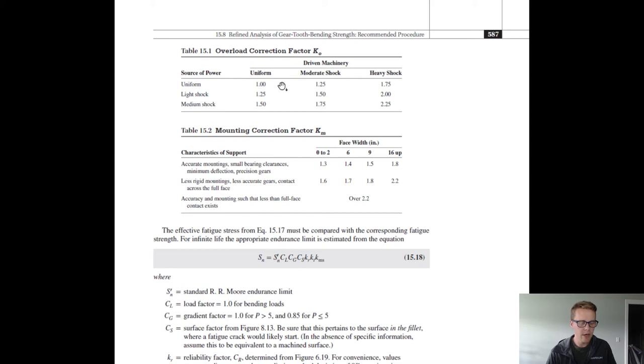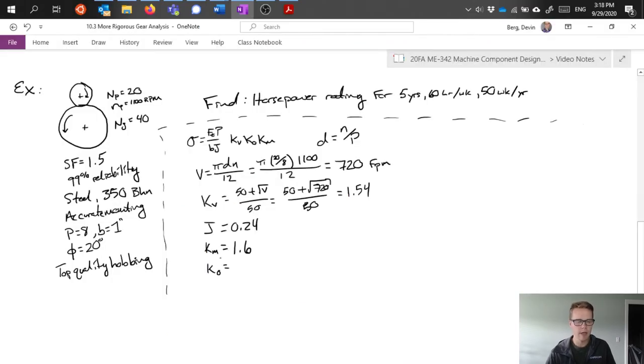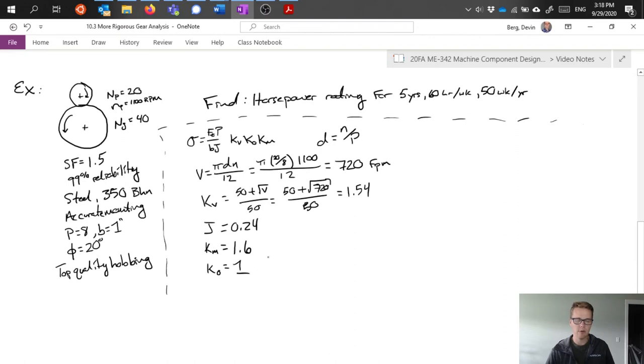And overload factor, KO. We don't have anything in the problem that specifies whether we should expect any shock loading. So we might go ahead and pick a KO value of 1. Putting this all together, we get FT times 8 over 1 times 0.24 times 1.54 times 1 times 1.6.